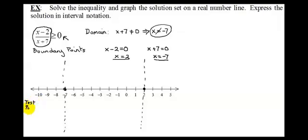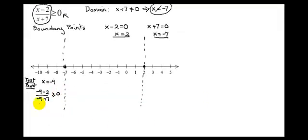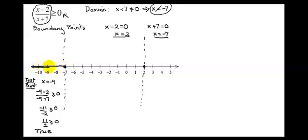If I look in the first region — anywhere between negative infinity and negative 7 — I can't use the boundary points, but I can use any other point in there. So I'm going to pick x equals negative 9. I plug negative 9 in for x in my original inequality and see if I get a true or false statement: negative 9 minus 2 over negative 9 plus 7, is it greater than or equal to 0? That gives negative 11 over negative 2. A negative divided by a negative is a positive. Is 11 halves greater than or equal to 0? Yes — that is a true statement. Therefore, I want everything to the left of negative 7.